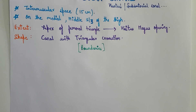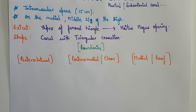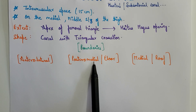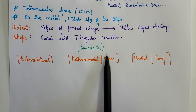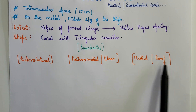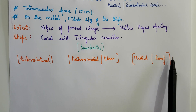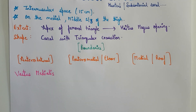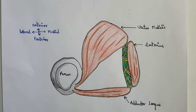Now let us talk about the boundaries of the adductor canal. Since the cross-section is triangular in shape, the adductor canal has three boundaries: the anterolateral boundary, the posteromedial boundary (which is also the floor of the adductor canal), and the medial boundary, which is also the roof of the adductor canal. The anterolateral boundary is formed by the vastus medialis muscle.